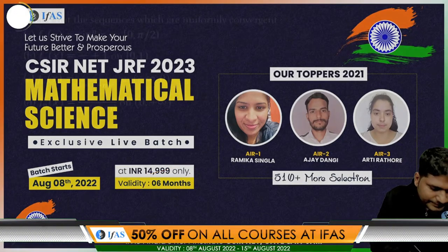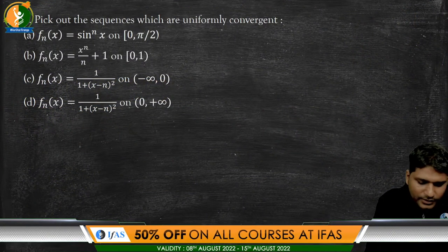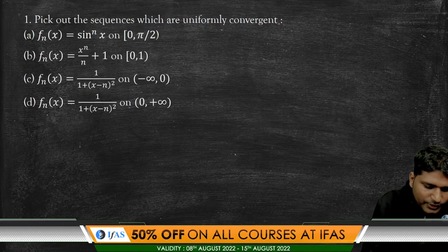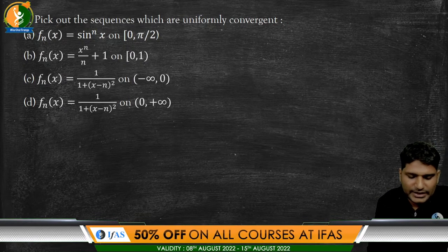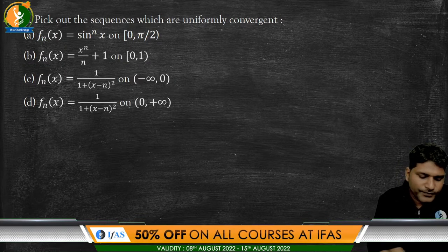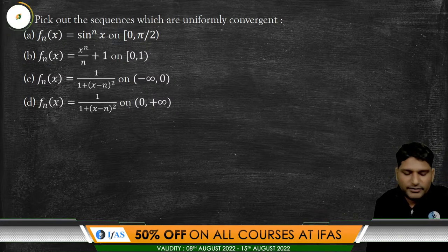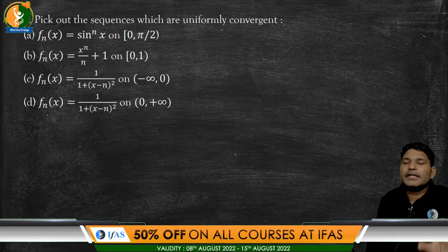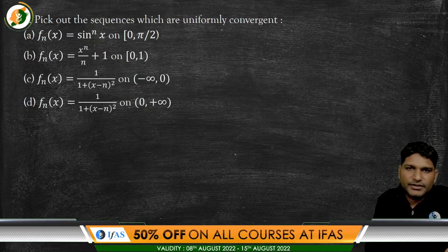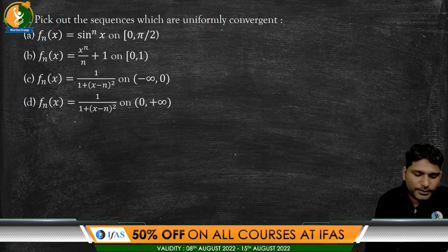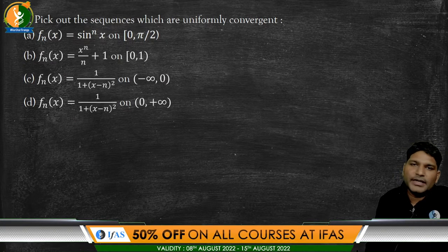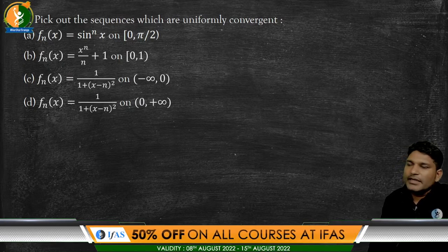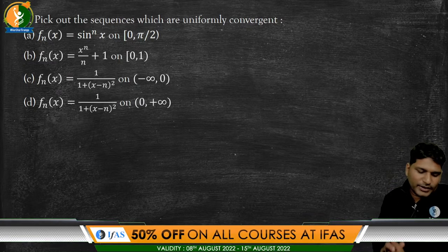Let's go to the first question. Pick out the sequences which are uniformly convergent from the following: number one, sin^n(x) on the closed interval [0, π/2); number two, f_n(x) = x^n/(n+1) on the closed interval [0, 1); number three, f_n(x) = 1/(1+(x−n)²) on (−∞, 0); and the last one, f_n(x) = 1/(1+(x−n)²) on (0, +∞). We need to identify which sequence is uniformly convergent. Simply apply the M_n test and all questions will be solved.